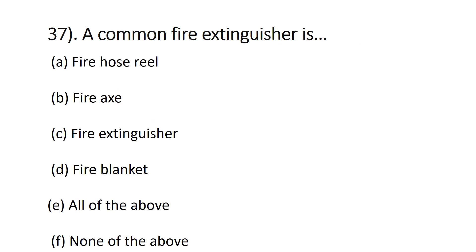Question number thirty-seven: a common fire extinguisher is — fire hose, drill, fire axe, fire extinguisher, fire blanket, all of the above, or none of the above. The correct answer is all of the above, because fire hose, drill, fire axe, fire extinguisher, and fire blanket are all common types used to protect against fire.